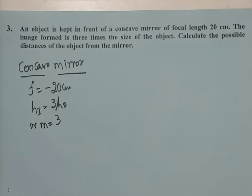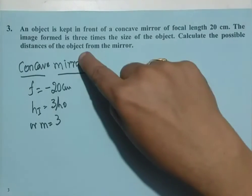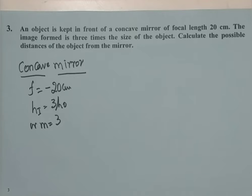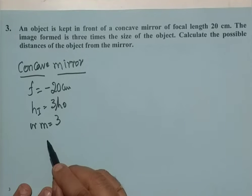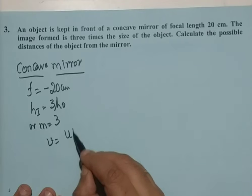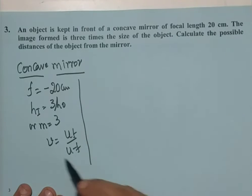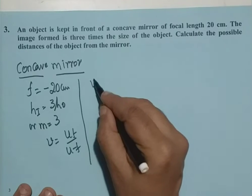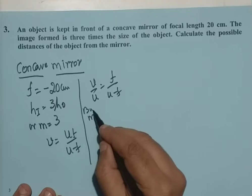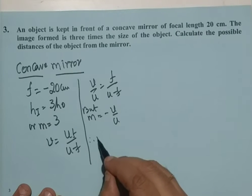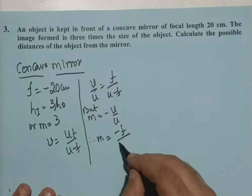For both cases, we calculate the object distance U. We use the formula M equals minus F by U minus F. For real image, M is minus 3, because a real image gives a negative magnification.